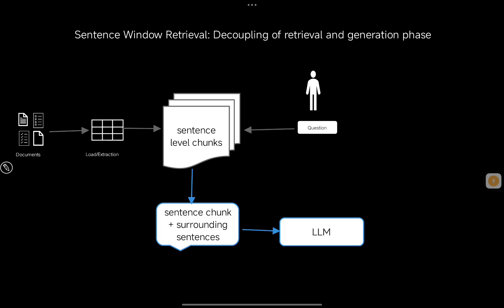Once the retrieval phase is done, we do context enhancement — we also fetch the surrounding sentences for the particular sentence that was retrieved. During generation, we enhance the context with those surrounding sentences and pass that to the LLM along with the question. This decoupling means we retrieve at the sentence level for precision, then enrich the context with surrounding sentences for generation, giving better retrieval and better context.